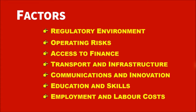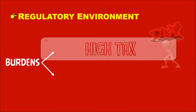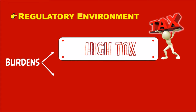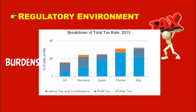Let's discuss these factors one by one, starting with regulatory environment. There are two major burdens on Italy. First, high taxes that dent all business profits and regulate them to an extent. Second, bureaucracy — excessive rules, regulations, and protocols on businesses. A chart shows the breakdown of the total tax rate.